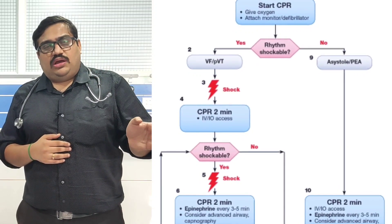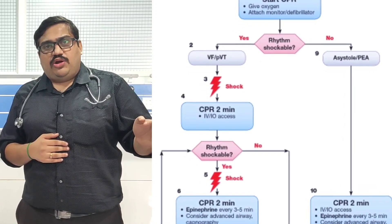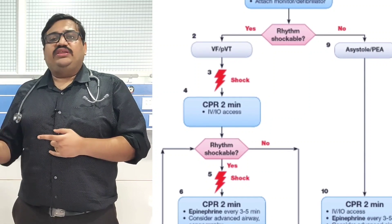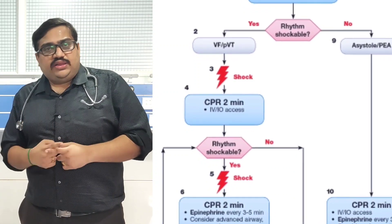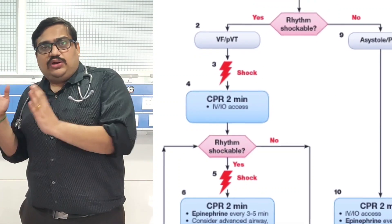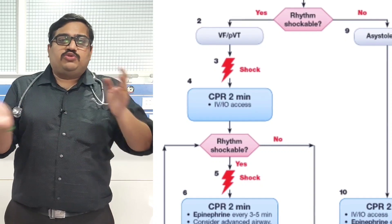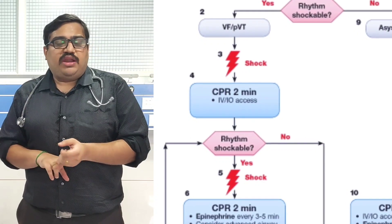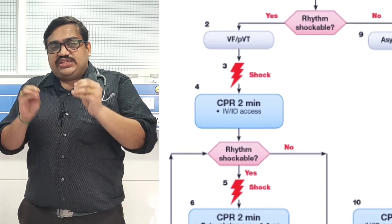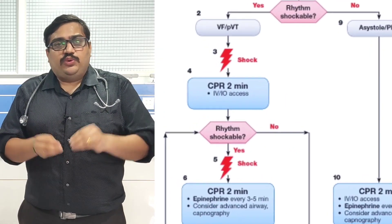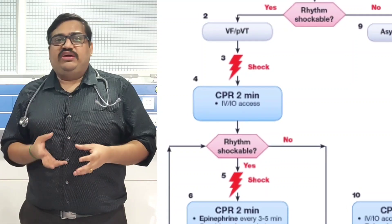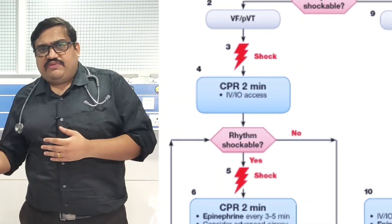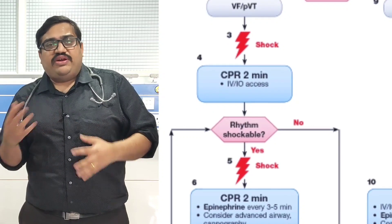Now for the shockable rhythm side. You connected the monitor and found a shockable rhythm — either ventricular fibrillation or ventricular tachycardia. As soon as you identify a shockable rhythm, you need to defibrillate the patient. Depending on the type of defibrillator available — monophasic or biphasic — majority of centers have a biphasic defibrillator. If you are unsure of the joules, select the maximum joules of energy available in that defibrillator, or you can give 200 joules in a biphasic defibrillator.